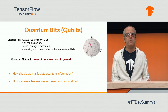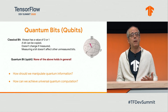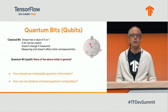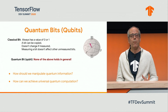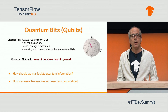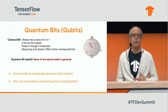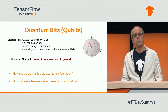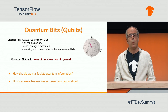Quantum bits can be represented as vectors on a Bloch sphere — like a globe where a classical bit points only at the north or south pole, but a quantum bit can point anywhere on the globe. Classical bits always have a value of 0 or 1, can be copied, don't change on measurement, and measuring one doesn't affect others. None of these properties hold for quantum bits, making the challenge of manipulating quantum information and performing quantum computation quite profound.